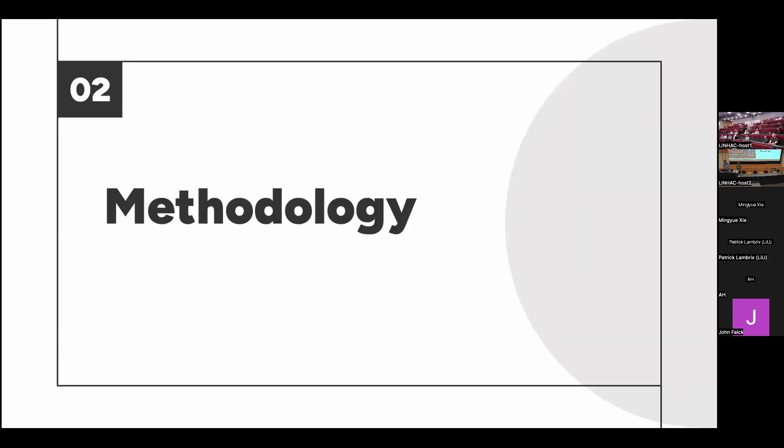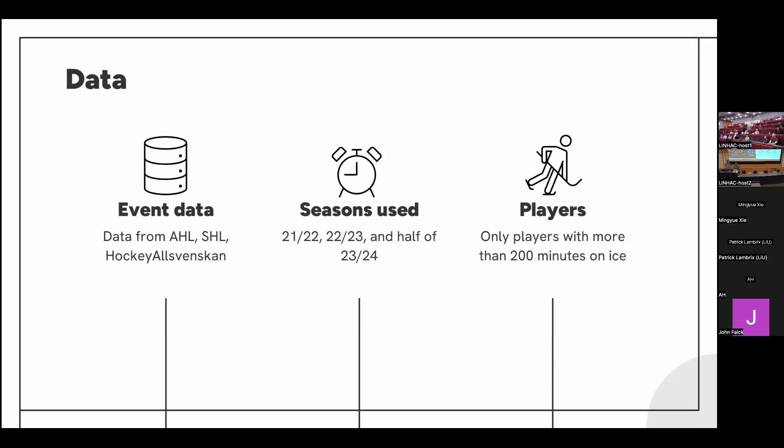Now we will present our methodology. The data used in this paper consists of data from the AHL, SHL, and Hockey Allsvenskan. This is SportLogic event data covering seasons 21-22, 22-23, and the last half-season. It includes 68 different teams and over 4,000 players. To ensure reliability that the vectors actually represent a player's playing style, we applied a threshold of at least 200 minutes of ice time for all players.